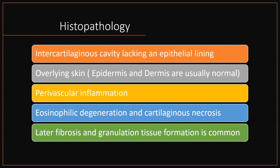Coming to the histopathology, it is known as a pseudocyst — pseudo means false. It is false because there is no epithelial lining. It is supposed to be a cavity between the layers of the cartilage, and because of some perivascular inflammation — meaning inflammation around the blood vessels — the cartilage degenerates, possibly through the action of eosinophils secreting some fluid. So a space forms between layers of cartilage or sometimes between the cartilage and perichondrium, giving rise to swelling.